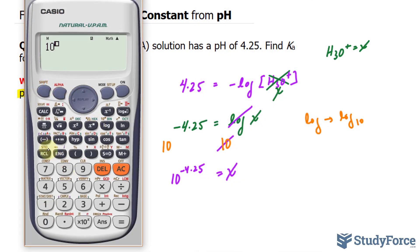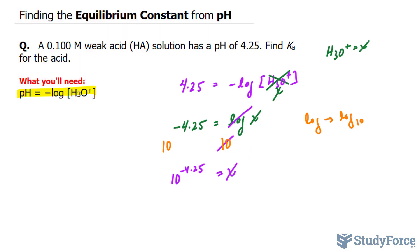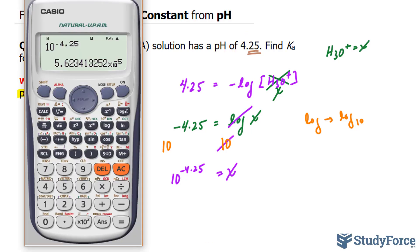10 raised to the power of negative 4.25 gives us 5.6, and we need this to two significant figures because the pH was reported as 4.25. We only look at the digits after the decimal place, and it's two digits. So this should be 5.6 times 10 raised to the power of negative 5.